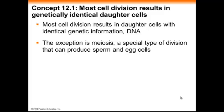Most cell division results in genetically identical daughter cells — we call the cells produced by cell division daughter cells. The one exception is a type of cell division known as meiosis, which is a special type that produces the gametes, sperm and egg cells, and we'll get to this in a later chapter.